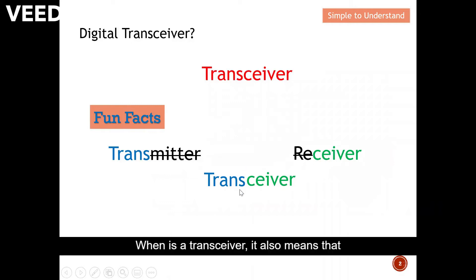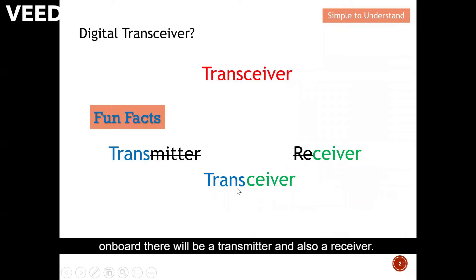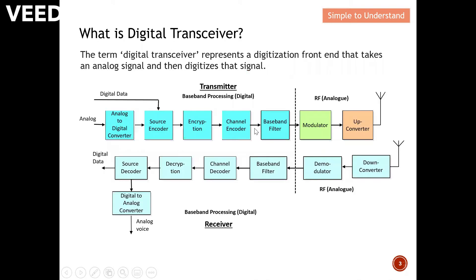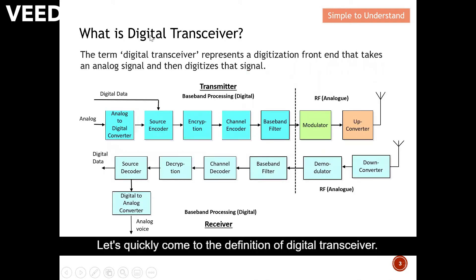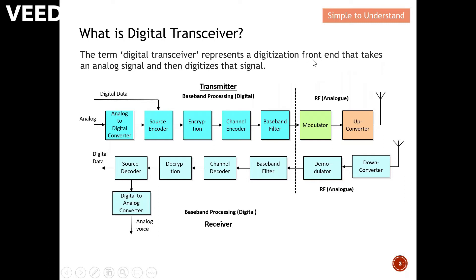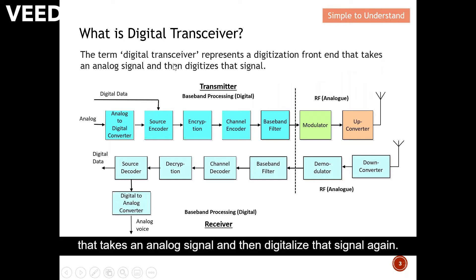When it's a transceiver, it also means that on board there will be a transmitter and also a receiver. Let's quickly come to the definition of digital transceiver. The term digital transceiver represents a digitalized front end that takes an analog signal and then digitizes that signal.